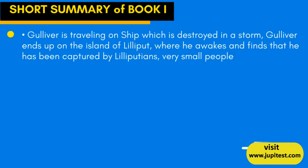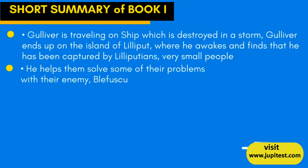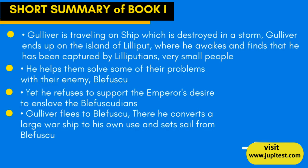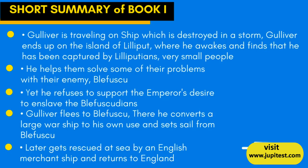Reldresal — a friend of Gulliver's in Lilliput. Short summary of Book 1: Gulliver is traveling on a ship which is destroyed in a storm. He ends up on the island of Lilliput, where he awakes and finds that he has been captured by Lilliputians — very small people. He helps them solve some of their problems with their enemy Blefascu, yet refuses to support the Emperor's desire to enslave the Blefuscudians. Gulliver flees to Blefascu, where he converts a large warship to his own use and sets sail.